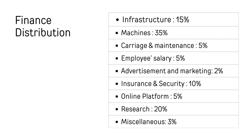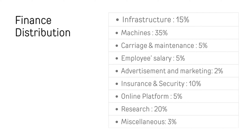Our financial distribution is as follows: 15% on infrastructure, 35% on machineries, 5% on repairs and maintenance, 5% on employees' salaries, 2% on advertisement and marketing, 10% on insurance and security, 5% on online platforms, 20% on reserves, and 3% on other salaries.